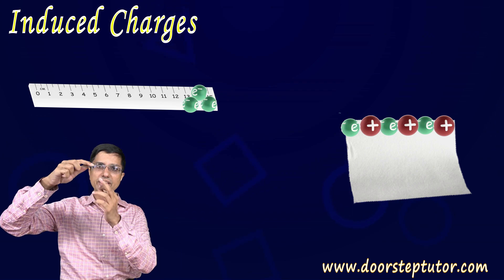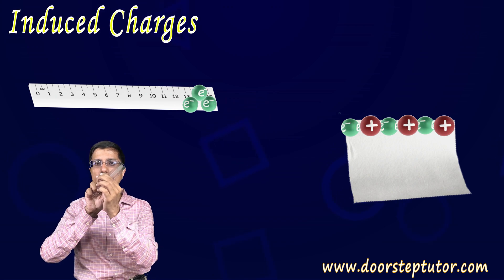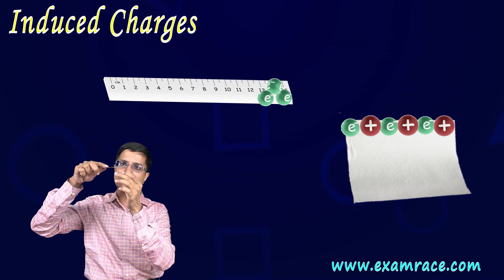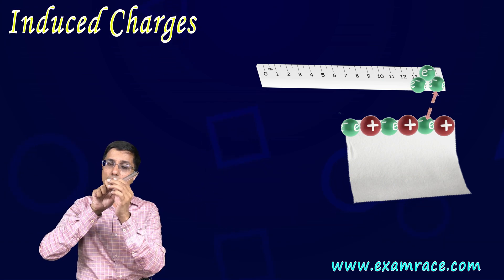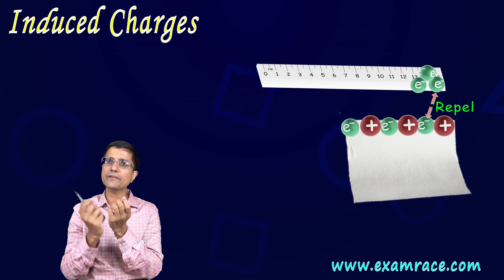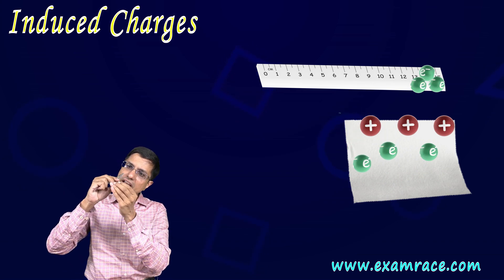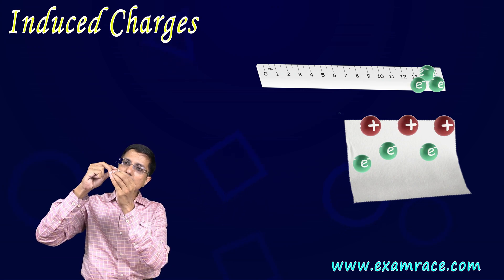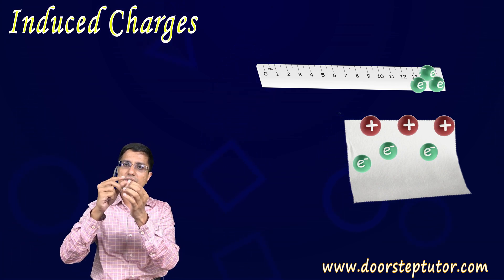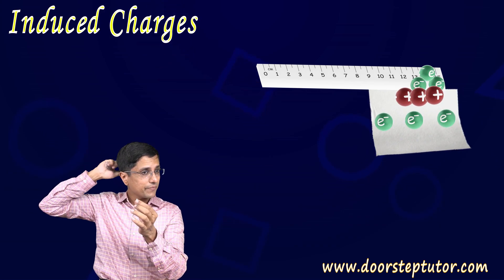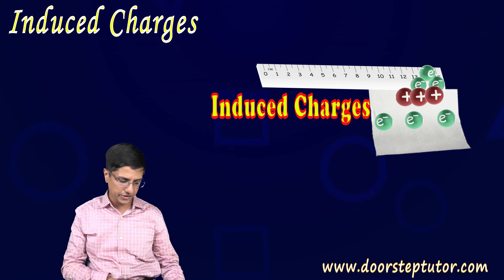As soon as I bring this negatively charged scale close to the paper, at the very tip of the paper there are atoms and electrons. Those electrons will feel repulsion from the plastic scale — they get pushed down. So at the very tip, because electrons have moved away, the paper becomes positively charged at the tip. This positively charged tip is then attracted to the negatively charged scale. This is known as induced charges — we are not creating charge, but inducing it.